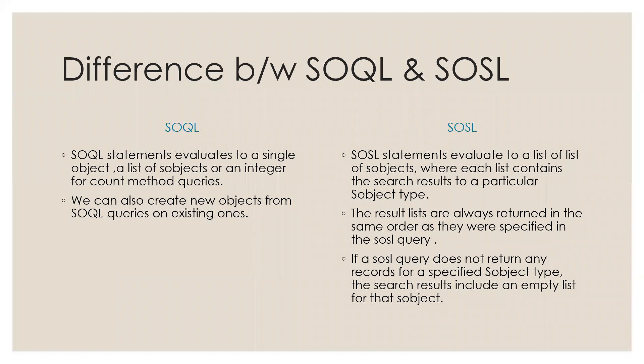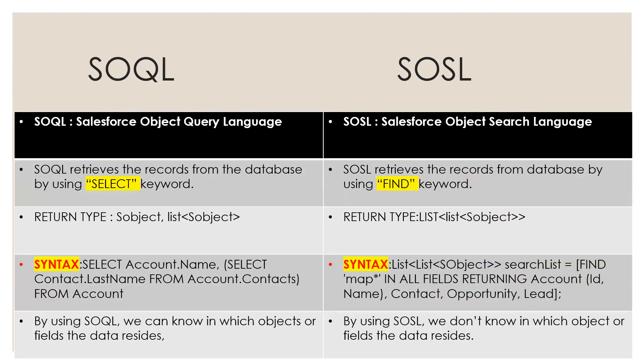If a Soso query does not return any records for a specified S-object, the search result includes an empty list for that S-object. These are the differences between Sokol and Soso. Sokol retrieves records from the database by using the SELECT keyword, and Soso retrieves records from the database by using the FIND keyword. The return type for Sokol is S-object or list of S-object, while for Soso the return type is list of list of S-object.